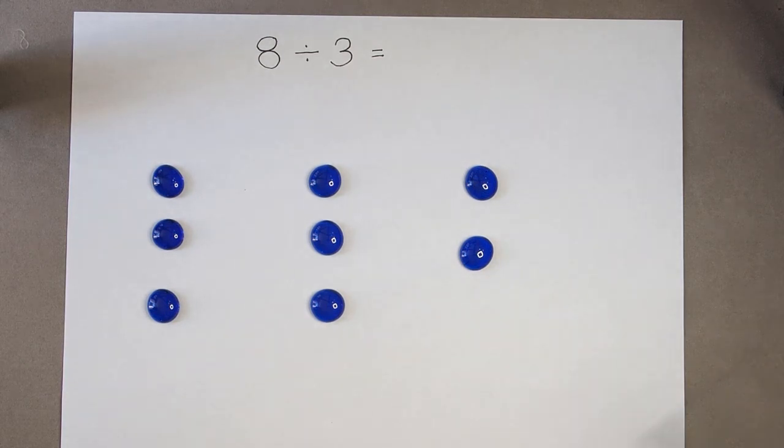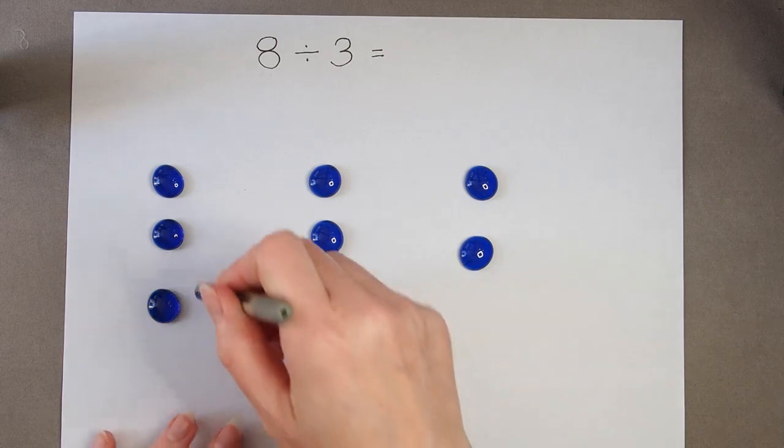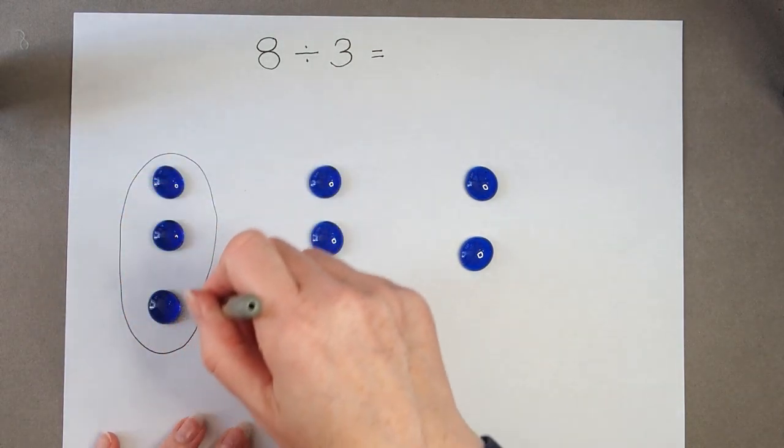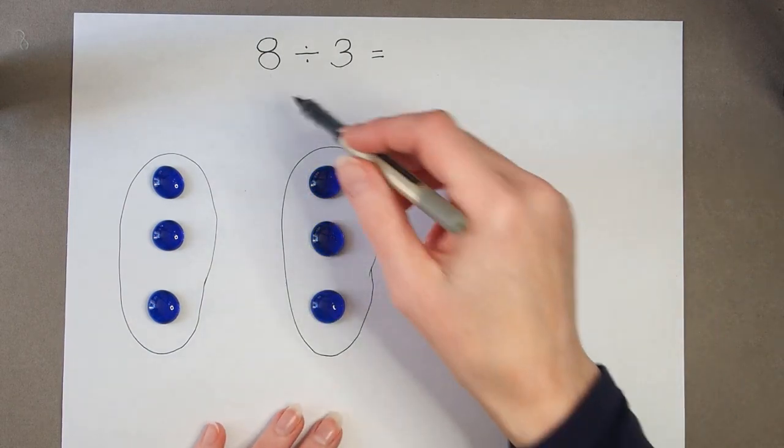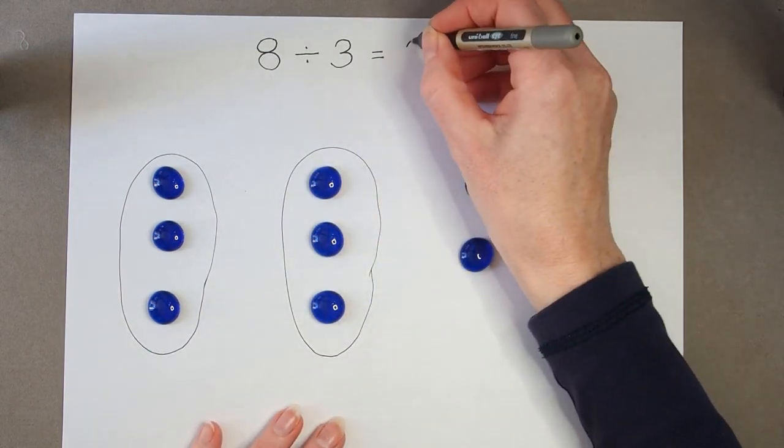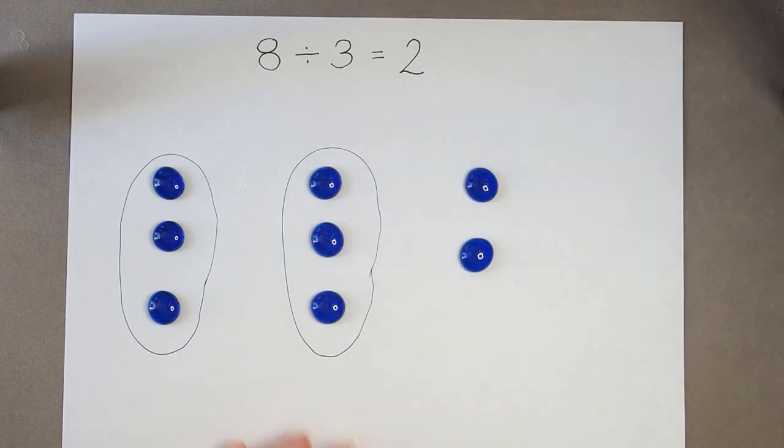So if I have a look at what I've got, I've got one group of 3, two groups of 3. So 8 divided by 3 is 2 and I've got 2 left over.